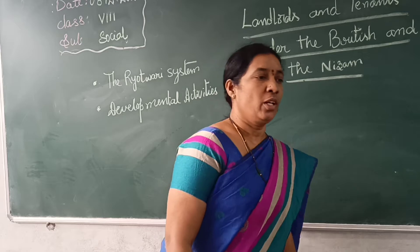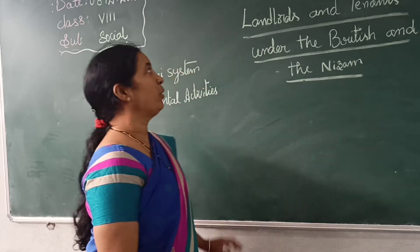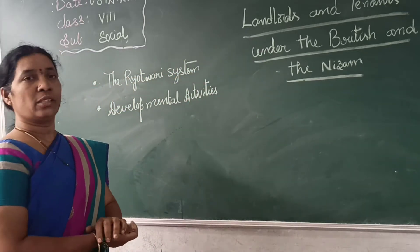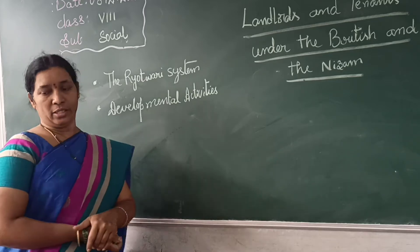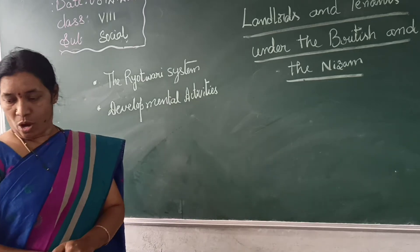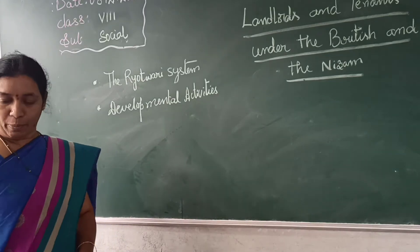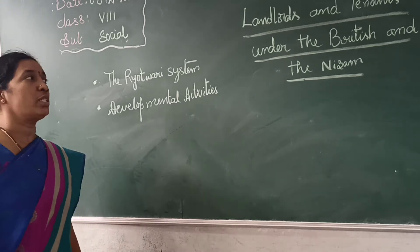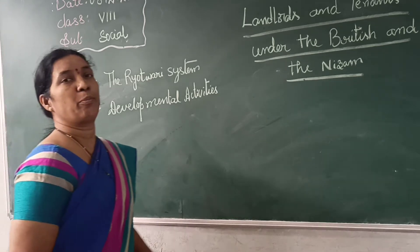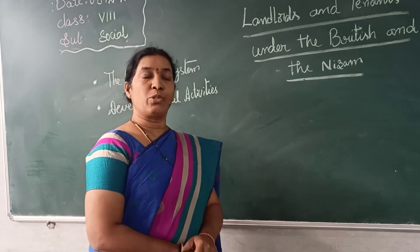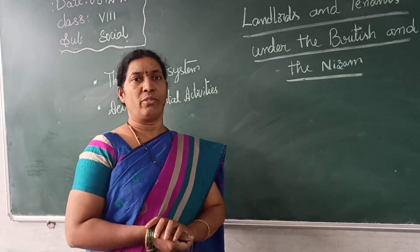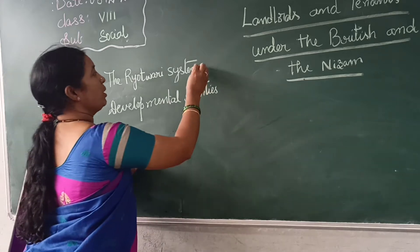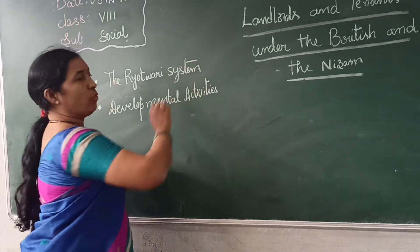Good morning children. Today we are going to discuss about lesson number 10, that is Land Outs and Terranets under the British and the Nizam. We will cover permanent settlements, different changes that happened, and how the Zamindars and Nizams were exploiting the peasants — these were discussed in the previous class. Now we are going to discuss about the Raithwari system.